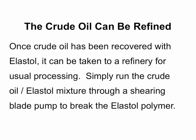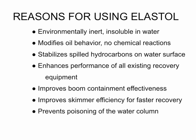A key point in Elastal's use early on spilled oil is that the oil will not be lost. It can be taken to a refinery and processed. Because Elastal forms a physical polymer with oil, the use of a shearing pump will break the polymer and allow the oil to be processed by standard procedures, or simple dilution with similar oil removes the viscoelastic character of the recovered oil. Elastal is environmentally inert and insoluble in water. Elastal modifies oil behavior without chemical reactions.